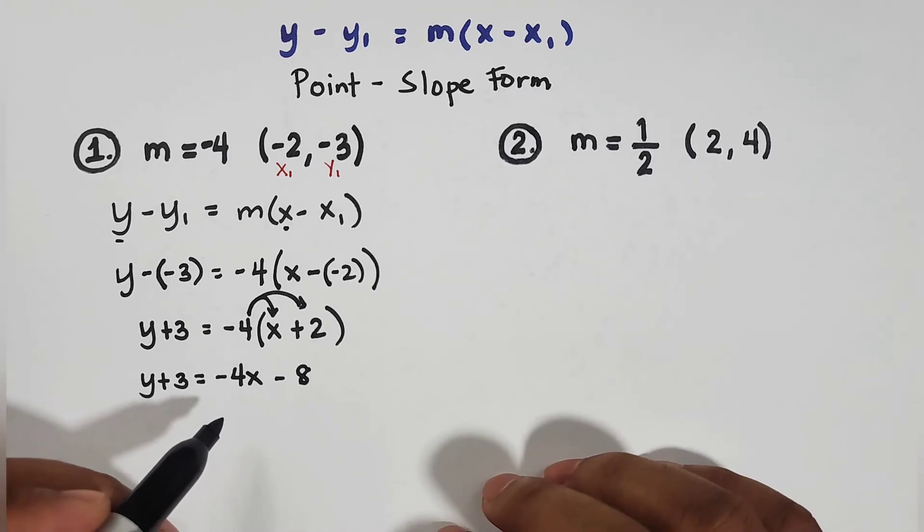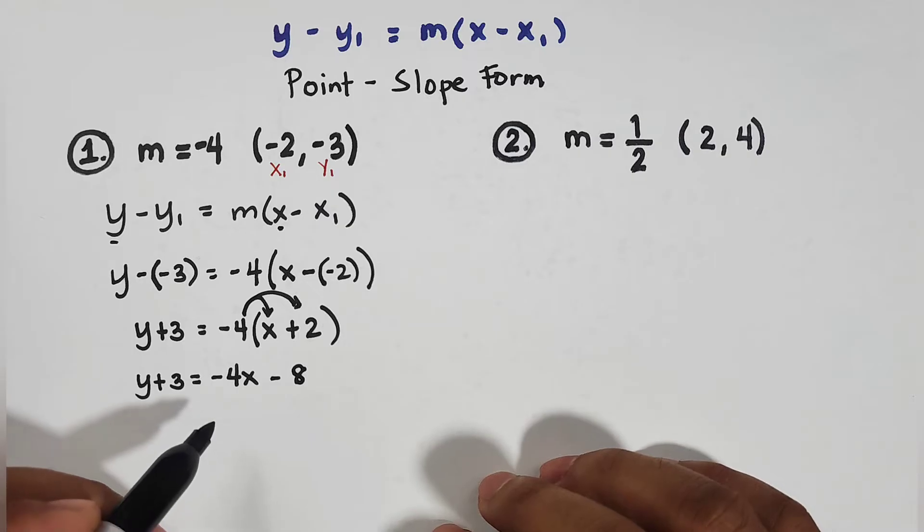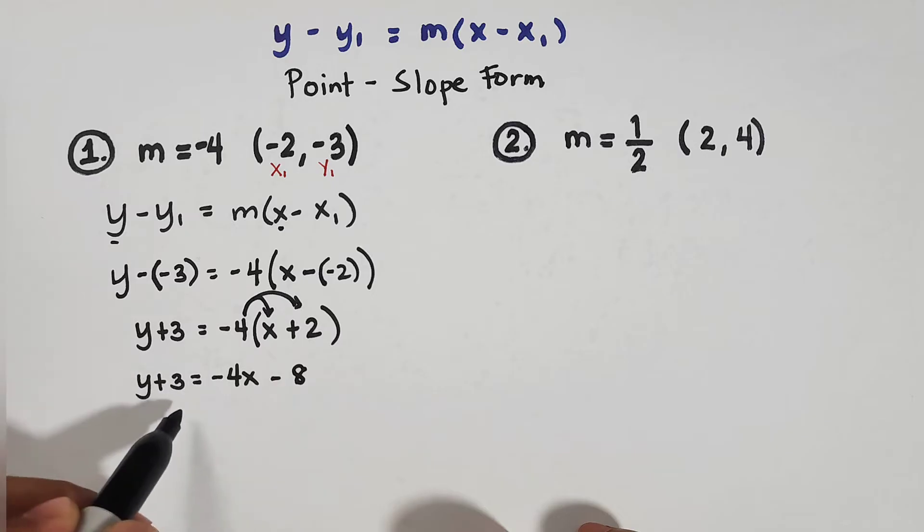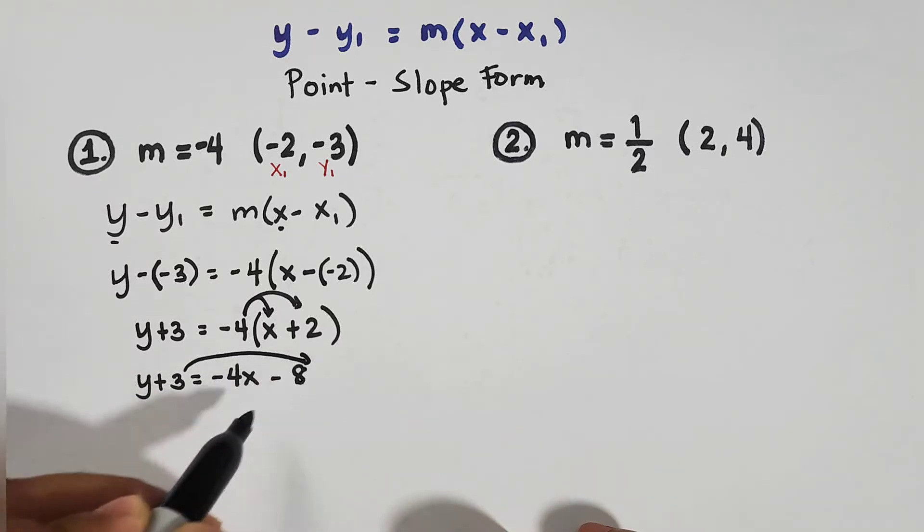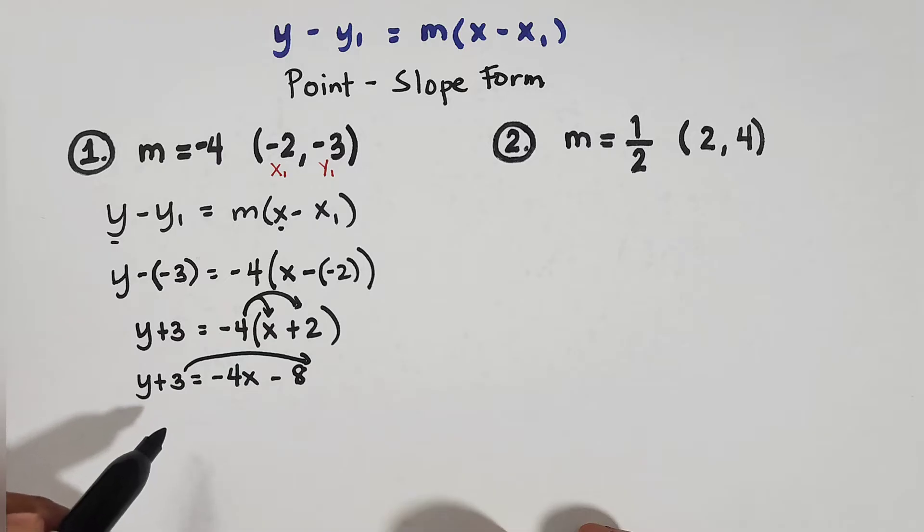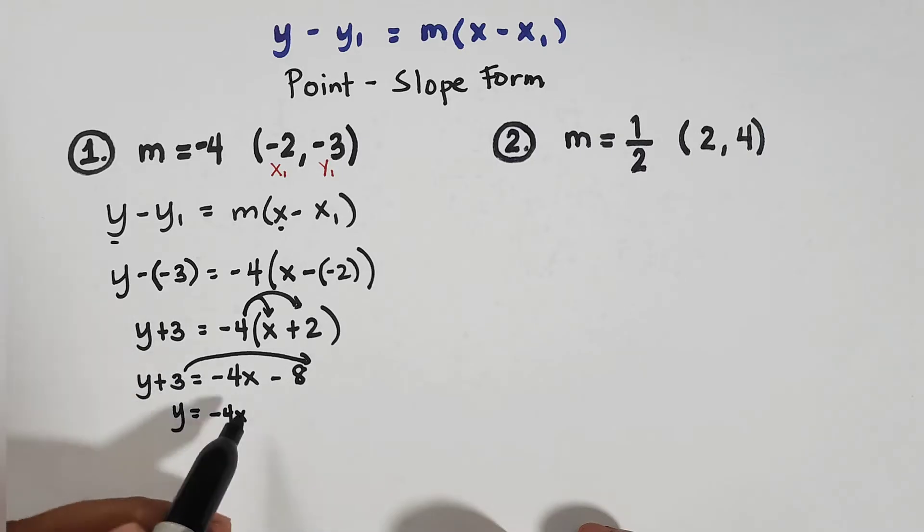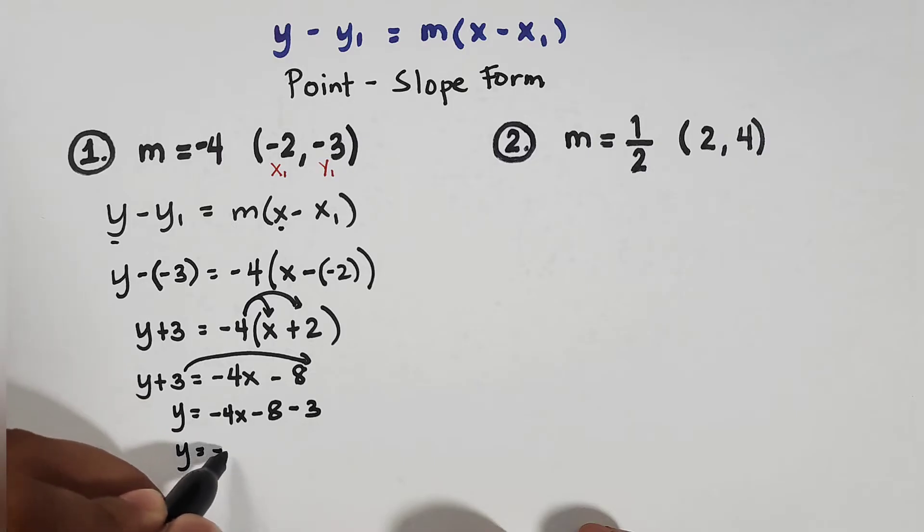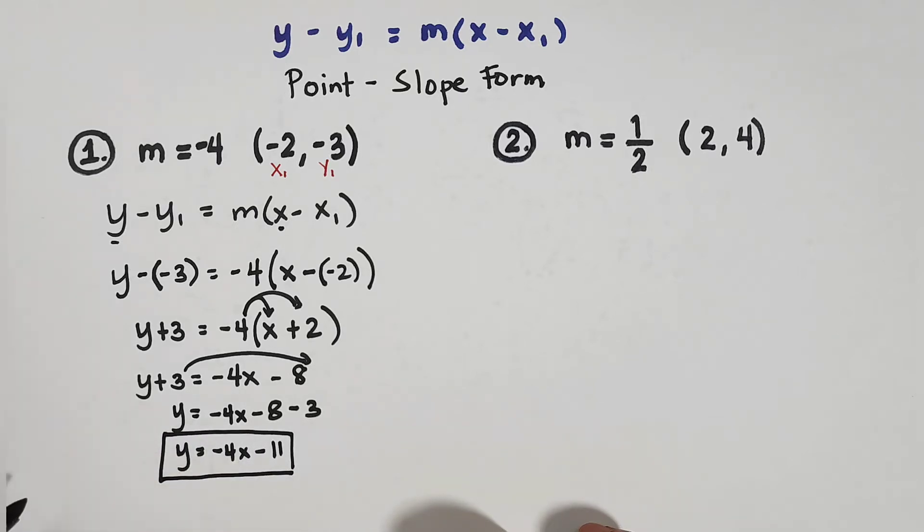So normally guys, when we are doing equations of the line, we are asked to represent our answer or finalize our answer in slope-intercept form and in standard form. Here, we will transpose negative 3 to get the slope-intercept form. It will become y equals negative 4x minus 8 minus 3. So this is y equals negative 4x minus 11. And as you can see, this is the slope-intercept form.